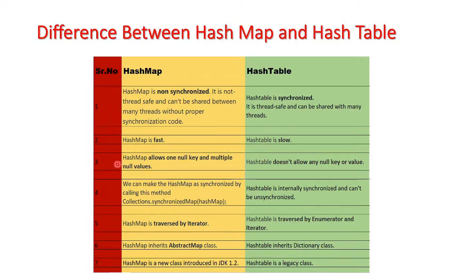The third difference between HashMap and HashTable is that HashMap allows one null key and multiple null values, whereas HashTable doesn't allow any null key or value. The reason HashTable doesn't allow null is that it internally uses the hashing principle — to calculate a hash code for an object it uses the hashCode() method, and for comparison of two objects it uses the equals() method.